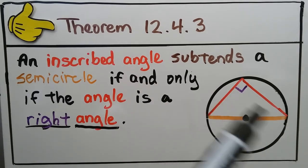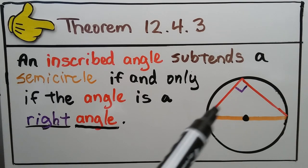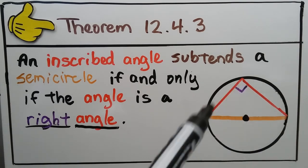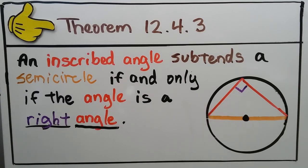This inscribed angle subtends this semicircle, this top half of the circle, if this angle is a right angle.